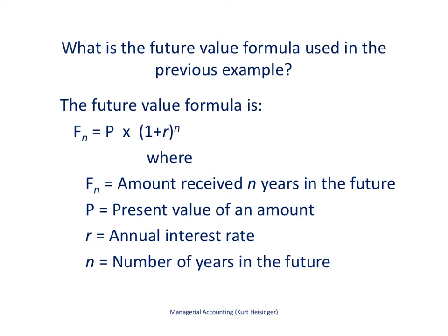Here's the formula. The future value is found by taking the present value — that was $1,000 in the previous slide — times 1 plus the rate, which was 5% on the previous slide, to the nth power. For the first example on the previous slide, it was one year, so we had it to the first power. The second example was for two years, so n equaled 2. All of the variables are defined. We are trying to find the future value of a certain dollar amount invested today.